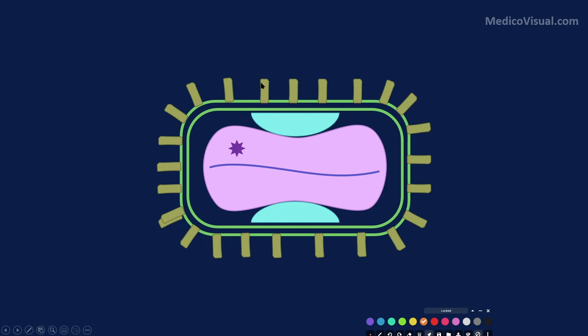Let's review the structure of the monkeypox virus, which we discussed in a 3D model in the last lecture. Here is the double-stranded DNA — shown simplified as a single line in this diagram. The virus also carries its own DNA-dependent RNA polymerase, whose function we will discuss in a few minutes.